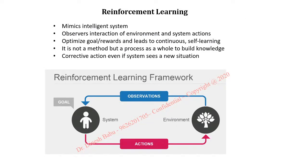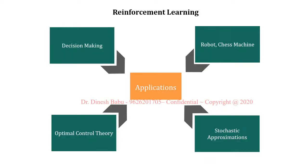The third module is reinforcement learning. Reinforcement means it is completely based on the response-to-stimulus method. Many gaming applications are developed with the help of reinforcement learning. For example, in a chess game on a computer system, if you move one piece, the system automatically moves another piece — that is because of reinforcement learning. Robots and many gaming applications are built using reinforcement learning.